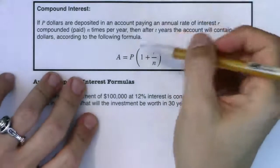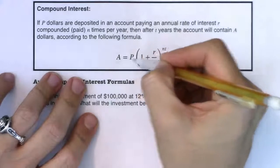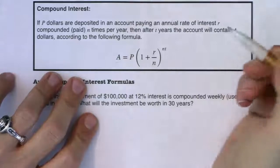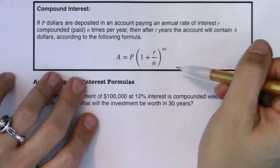Okay, so we got a lot of letters. We actually have five of them. We have A, we have P, we have R, we have N, and we have T. So there are five variables in here.